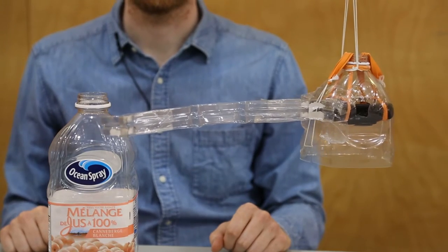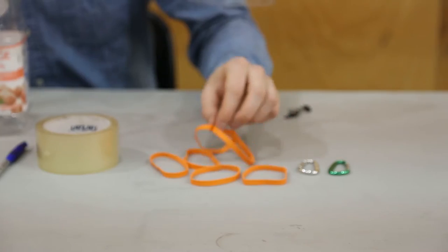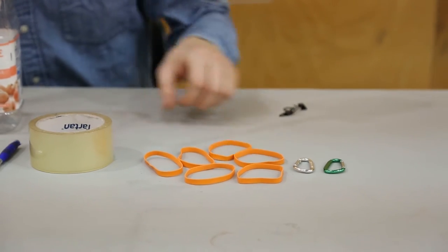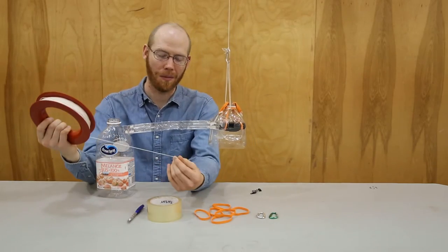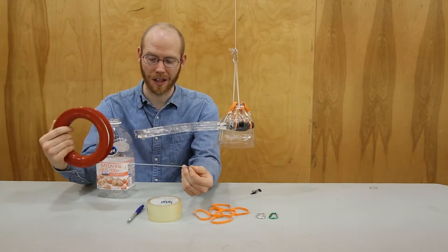We're going to use a juice bottle, six rubber bands, and some string. I'm going to use the string that came with the Public Lab balloon kit.